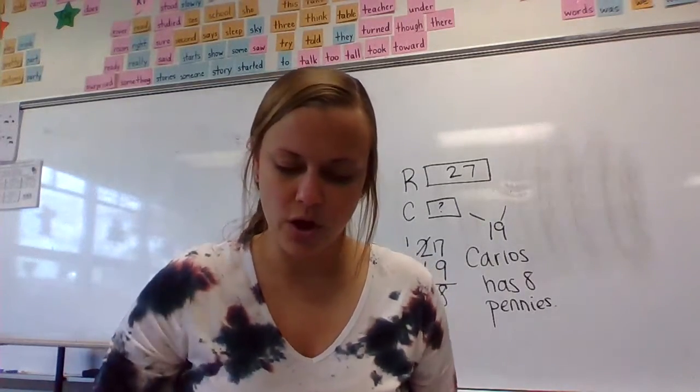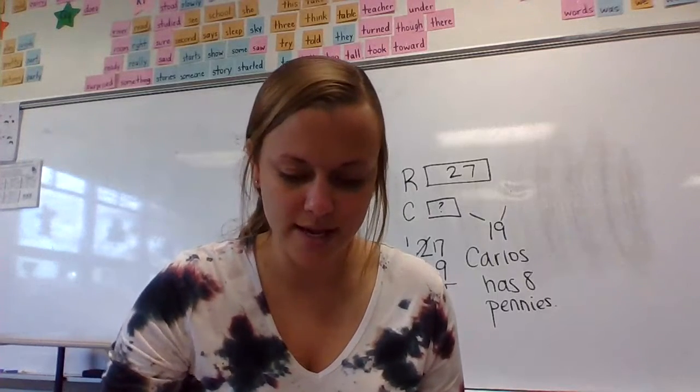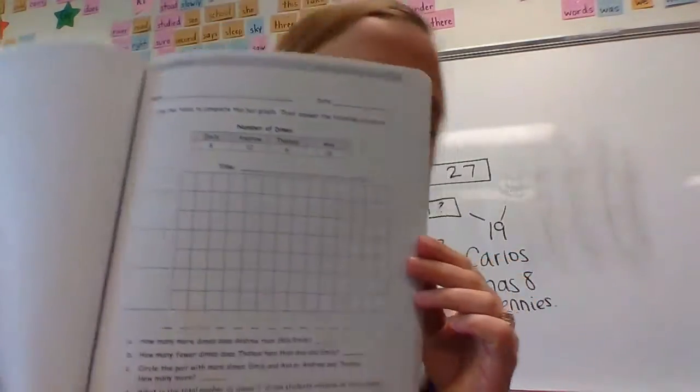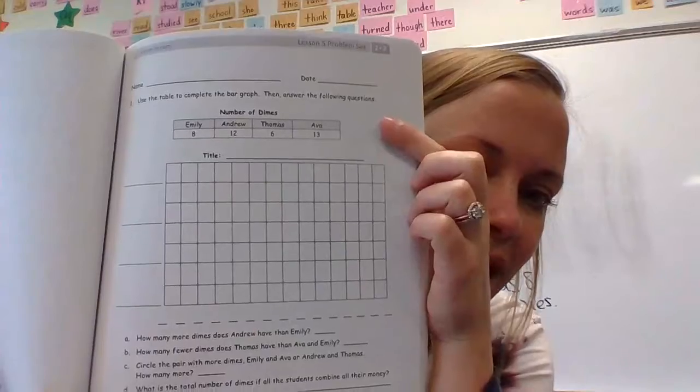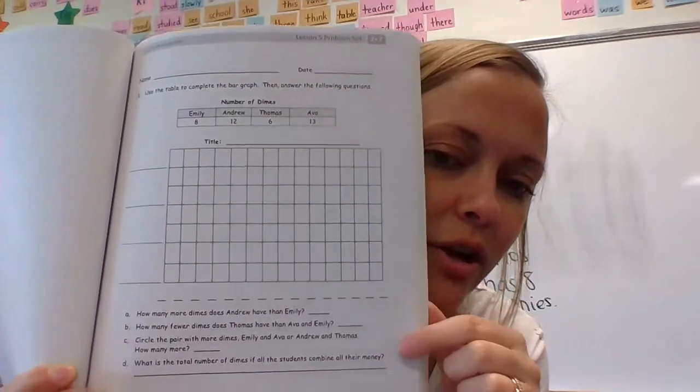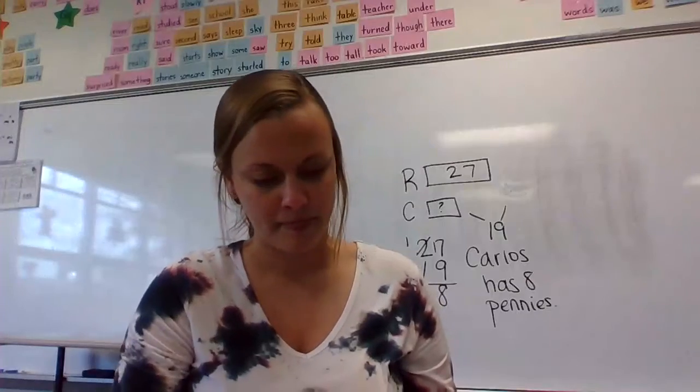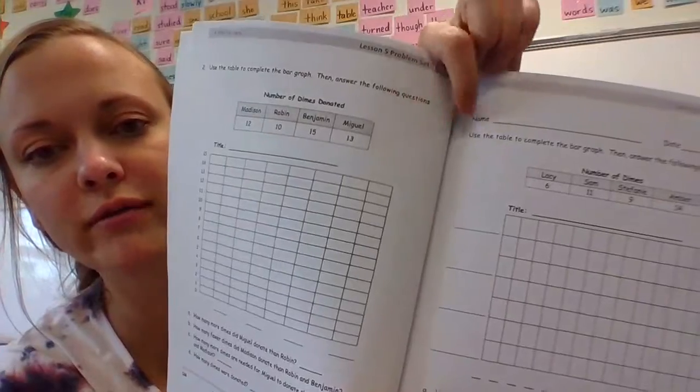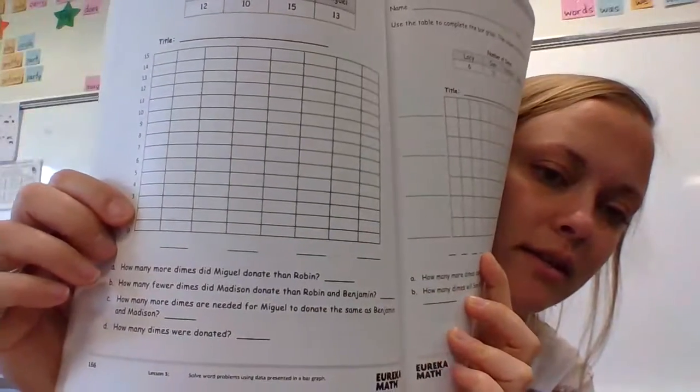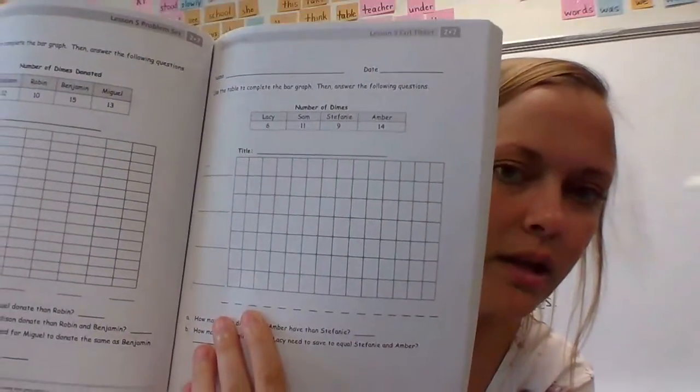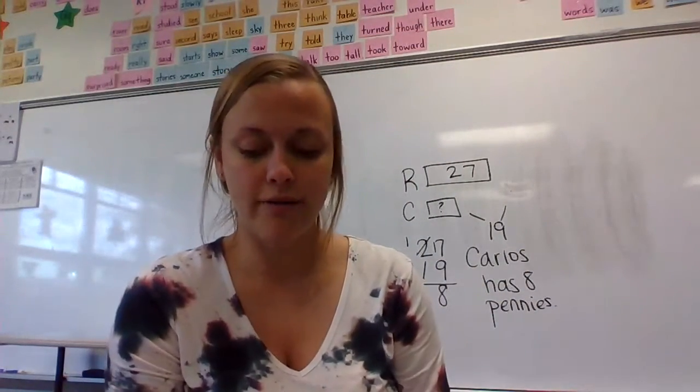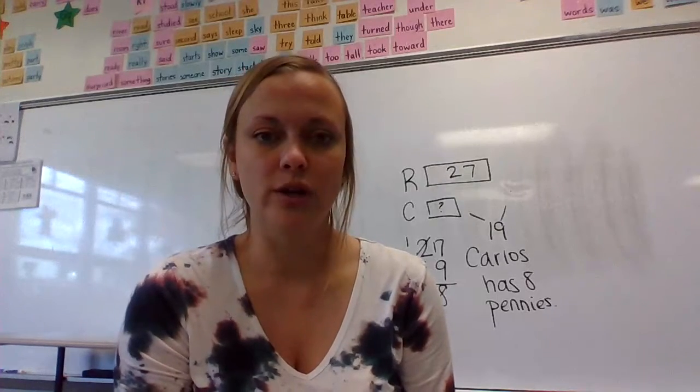Okay so then for your problem set the exact same thing. You have a bar graph, you got number of dimes up here with some kids names, you got to put the information on your graph and then answer the questions. Same thing, number of dimes donated, there's your information that you need to make your bar graph, go down here make your bar graph and then answer your questions at the bottom. And then that's just your exit ticket so keep doing the same thing, you got your bar graph, make your bar graph, answer your questions. All right.